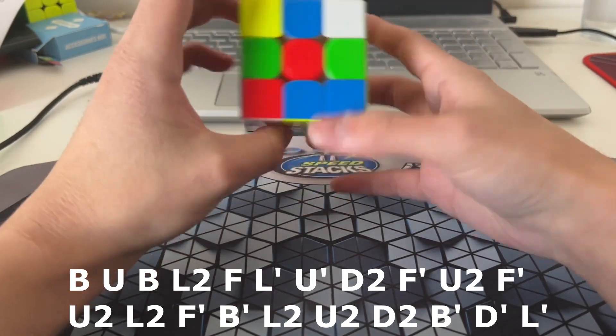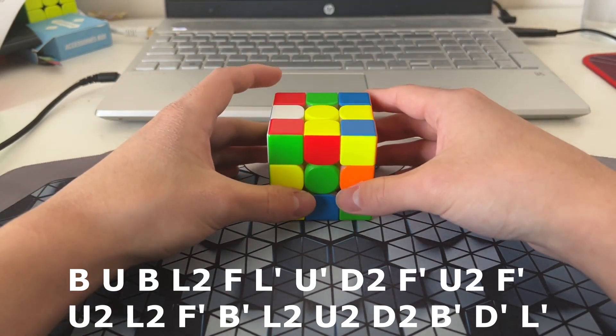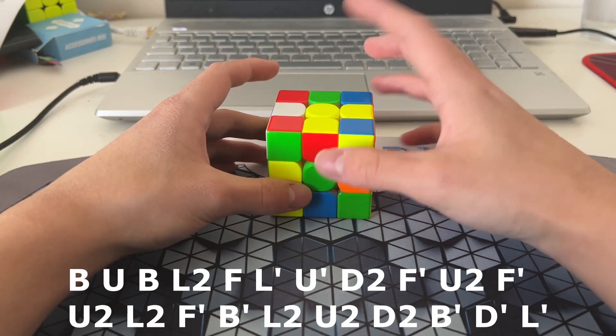Once again, pretty nice block, but... Okay, it's a pretty easy x-cross. I think instead of x-crossing, I'll just solve a free pair, and then keyhole the edge in.